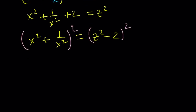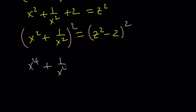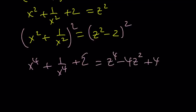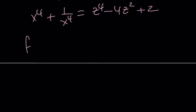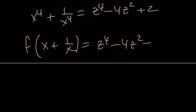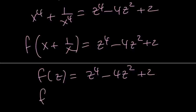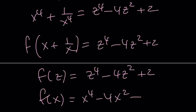From here we get x to the 4th plus 1 over x to the 4th plus 2 equals z to the 4th minus 4z squared plus 4. Subtracting 2 from both sides gives z to the 4th minus 4z squared plus 2. And f of x plus 1 over x equals this — replace x plus 1 over x with z, get f of z as before, then replace z with x. These x's and z's are all dummy variables with different roles, and you'll get the answer: f of x equals x to the fourth minus 4x squared plus 2.